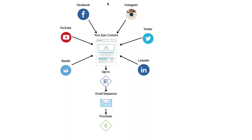Every piece of content that we publish across these networks all leads back to your core content. As you can see in this funnel, that's how we do it — we drive traffic by starting a conversation, grabbing interest, holding that interest, and pulling people further into the funnel. They hit the blog post and then work their way down into the email sequence and eventually become a customer.